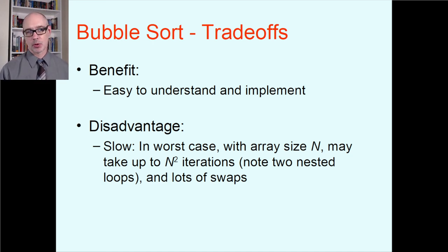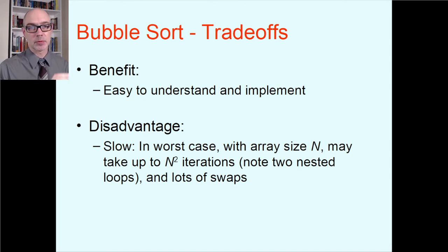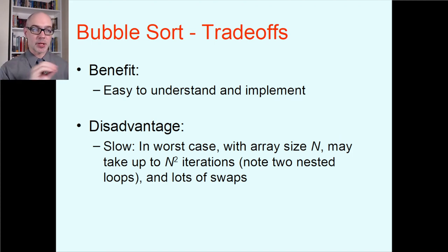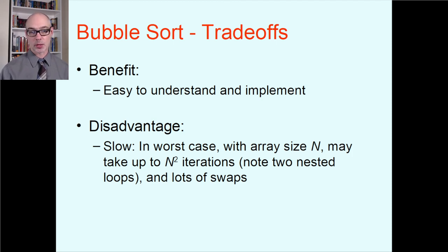The disadvantage is that it's relatively slow compared to other algorithms. Remember, bubble sort has nested loops — an outer do-while and an inner for loop. We said the total number of iterations is the product of the outer and inner loop counts. If you have an array of size n, the do-while loop could go as many as n times, and the for loop also goes n times, so worst case that's n times n — n squared total iterations.